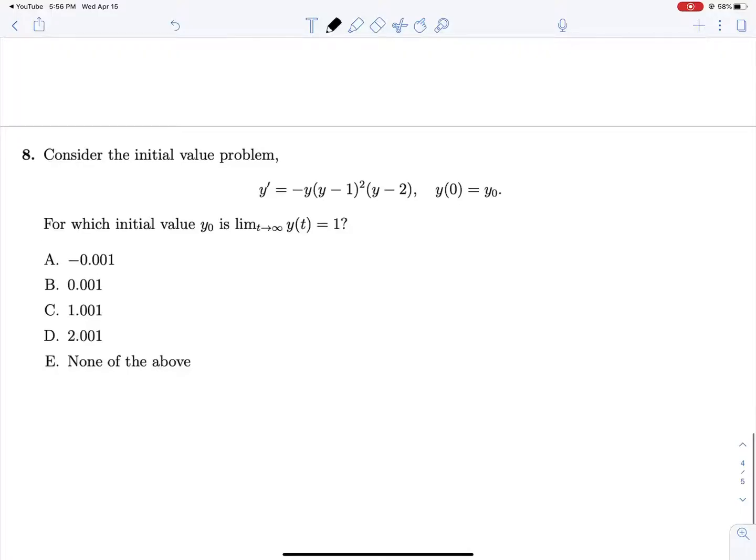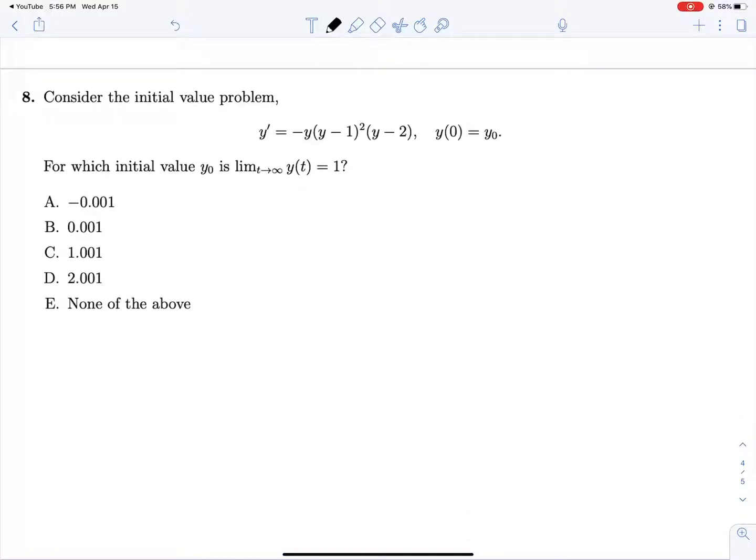And our final problem, we are considering this initial value problem for which initial value y_0 is the limit as t approaches infinity of y(t) equal to 1. So instead of drawing everything out and figuring out the whole behavior of the entire system, all I'm going to do is just plug these values in individually and see what happens. Because we know that our solutions for y prime equals 0 are y equals 0, y equals 1, and y equals 2. So actually I think we will do the whole thing.